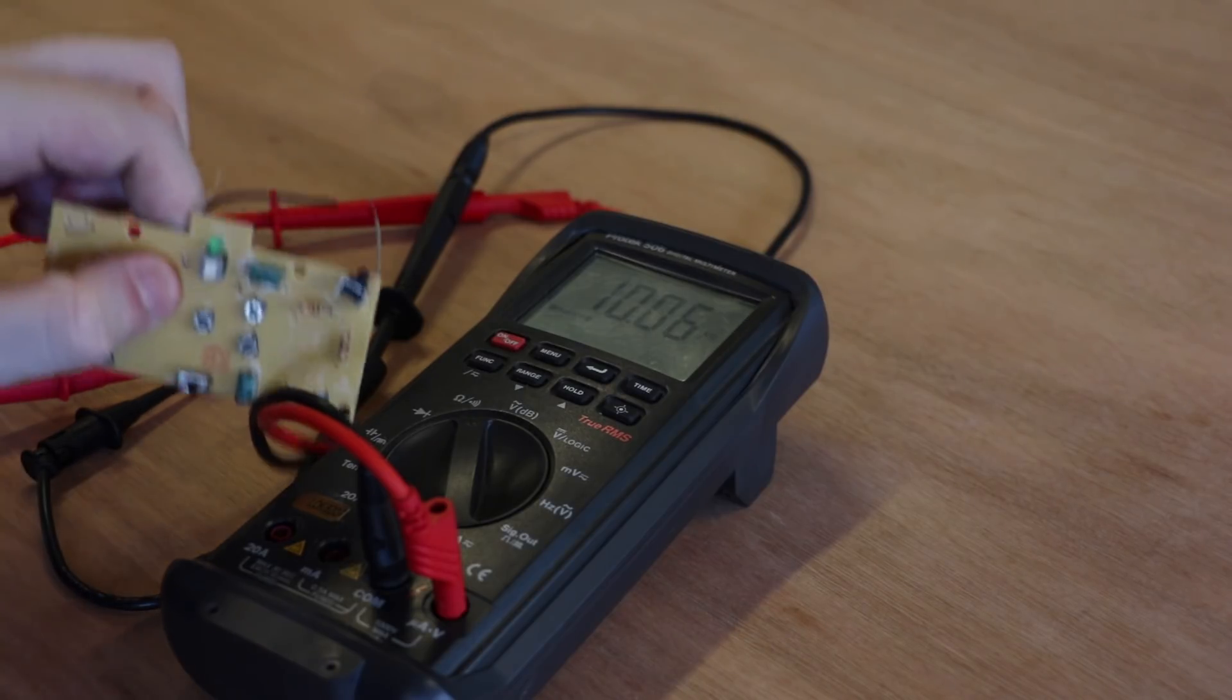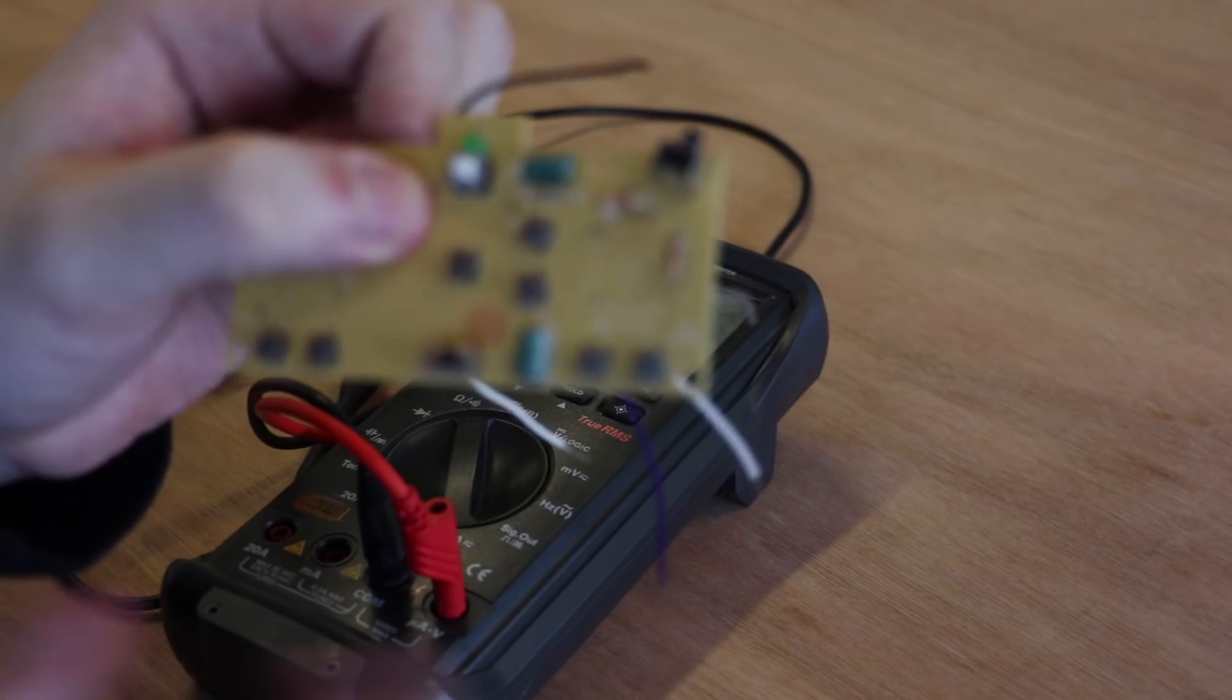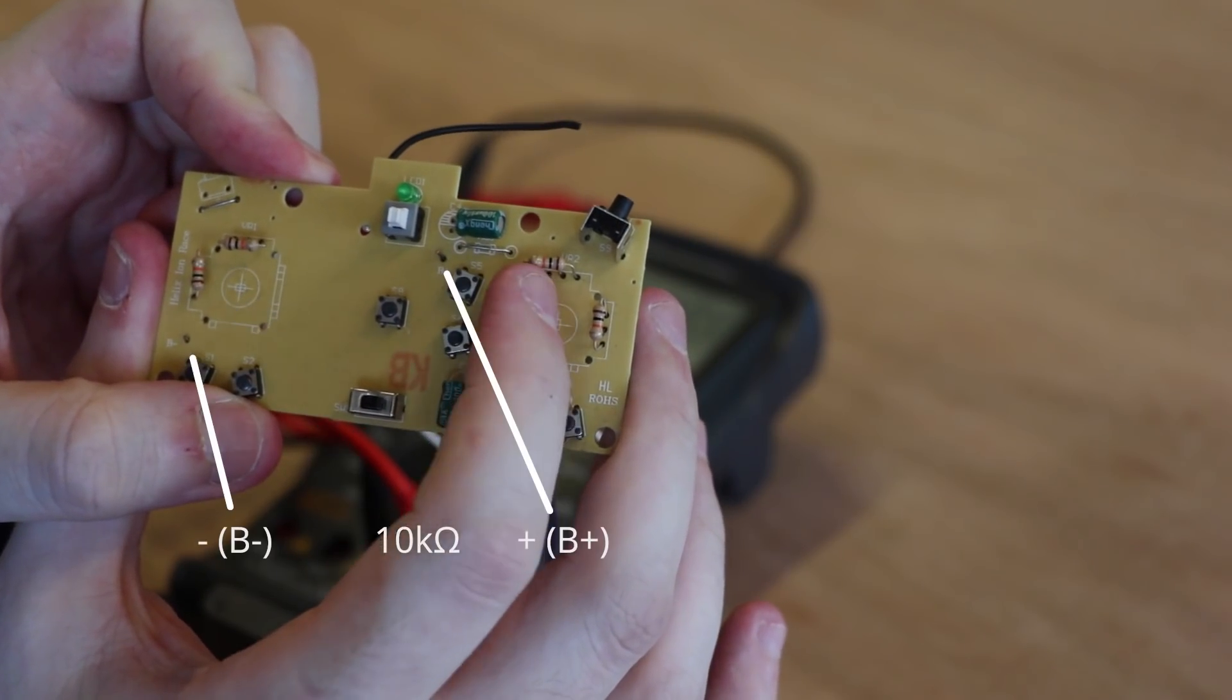Find four resistors of the same value and solder them to the outer ends of each potentiometer. In this case, there are four 10k resistors needed.